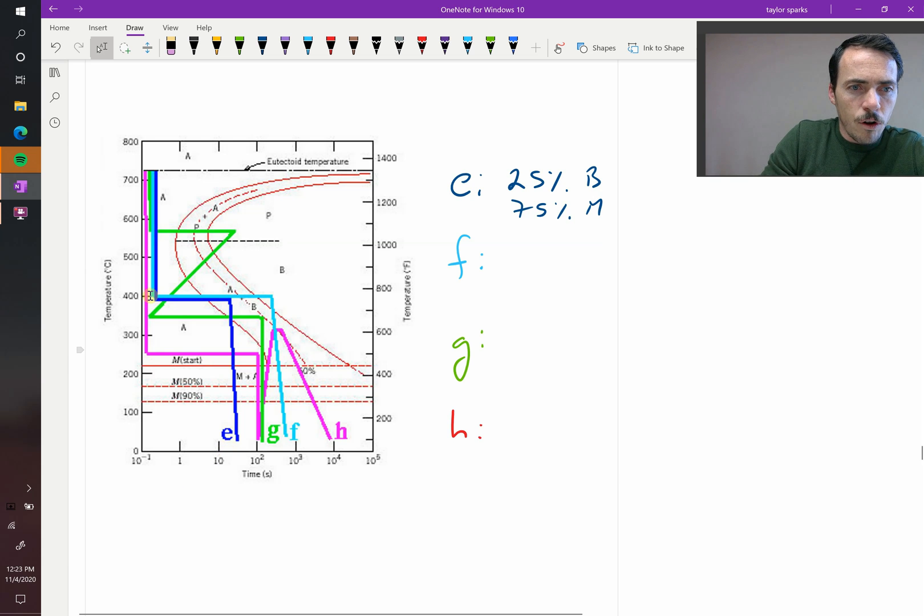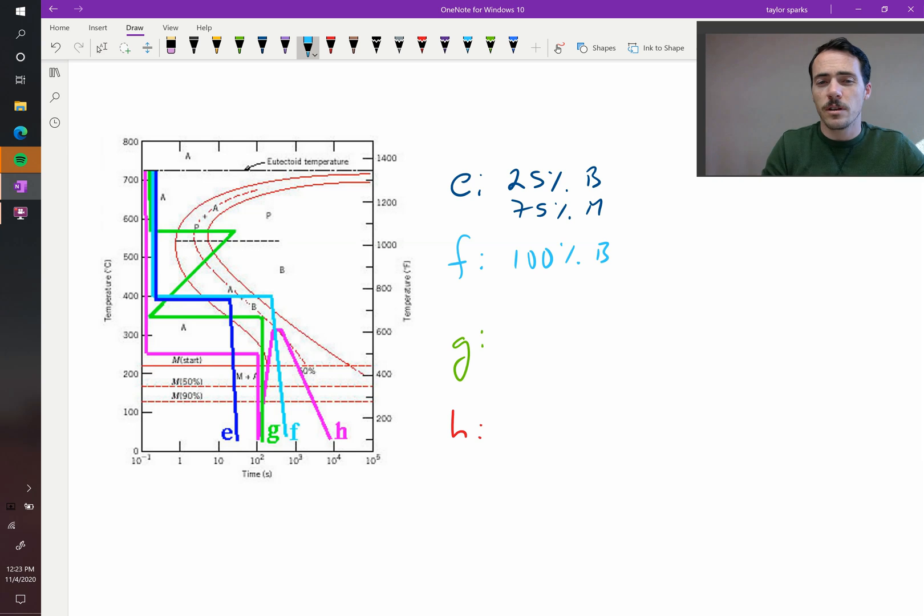F, they hold it all the way through here to bainite, and then they quench it down, so it's going to be 100% bainite. It's not going to have any martensite, because we consumed all of our austenite turning into bainite, and you only get martensite from austenite, so if you've consumed all of it, it doesn't matter that you quenched it.